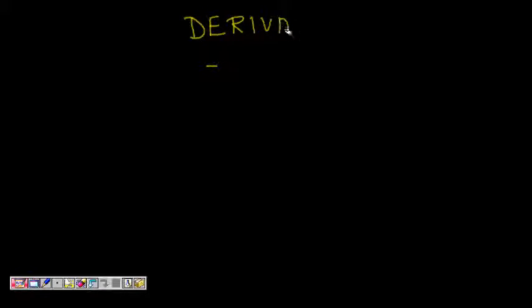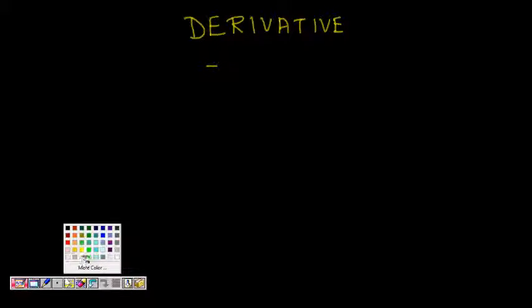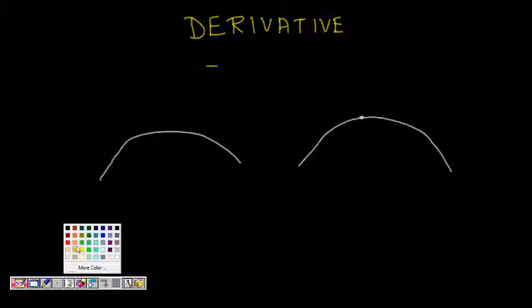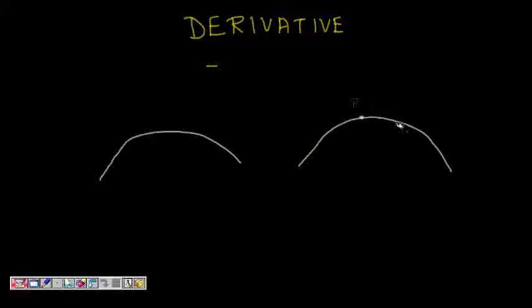In this lecture we will look at a concept called derivatives. Before looking at this, we will try to see what is the tangent to a function. So we have a function and we want to find the tangent to the function at some given point. We want to find the tangent at this point, so we take a second point Q.